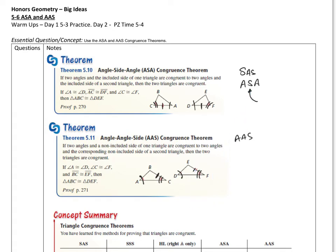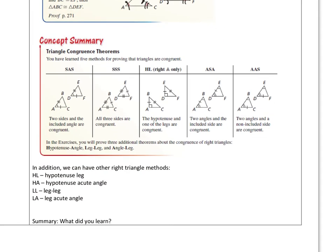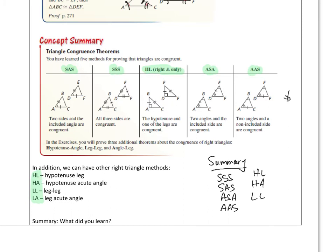Here is a quick summary of all the ones we've talked about: side-angle-side, side-side-side, angle-side-angle, angle-angle-side, and hypotenuse-leg. We also have the right triangle ones: HL (hypotenuse-leg), HA (hypotenuse-acute), LL (leg-leg), and LA (leg-acute).